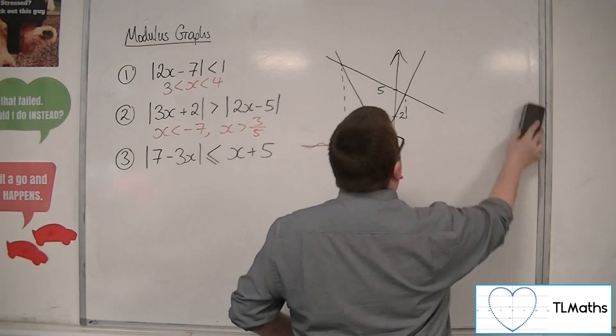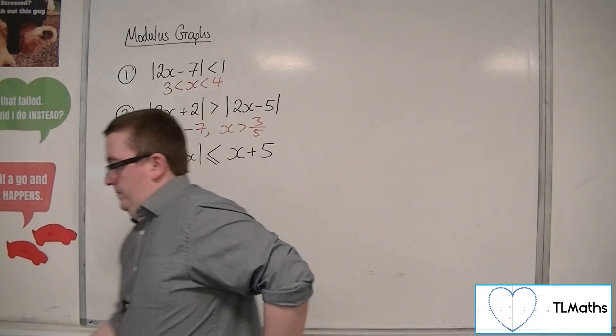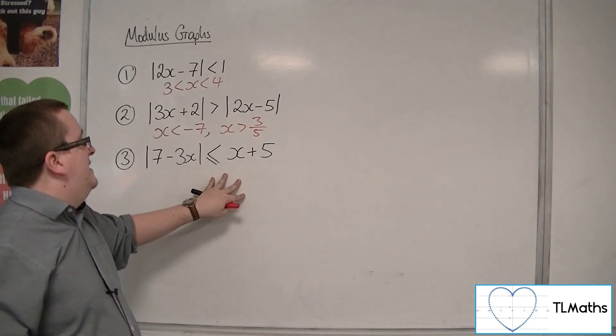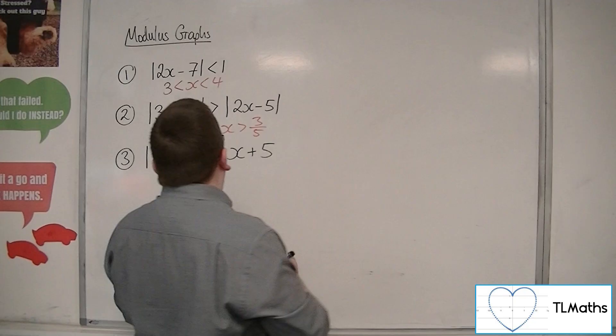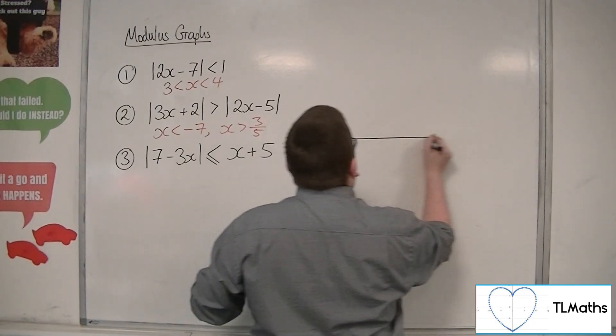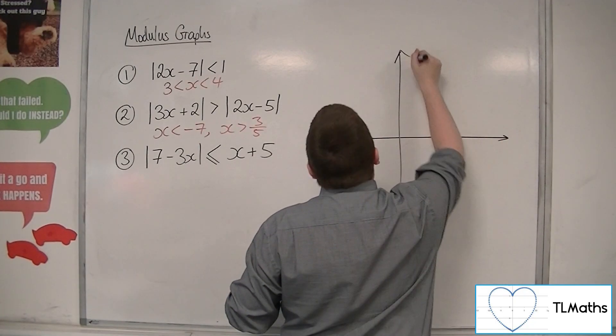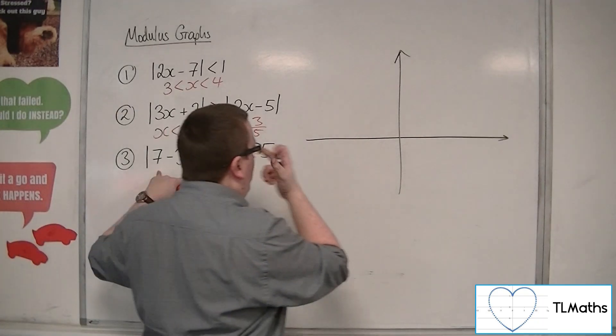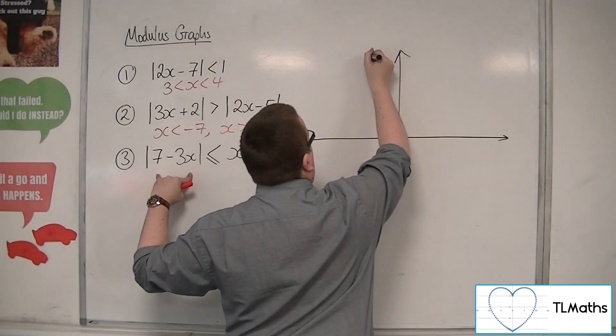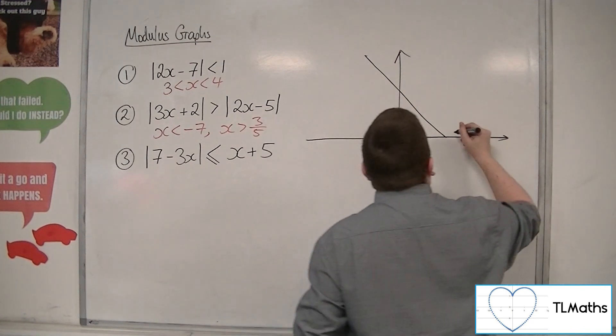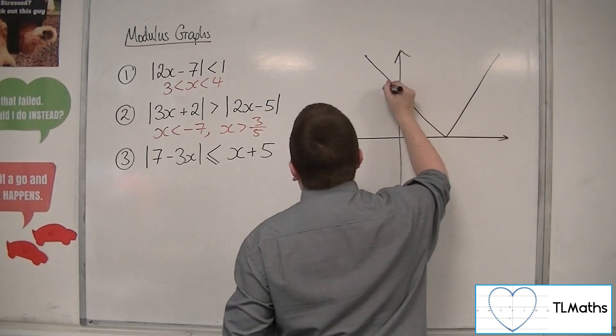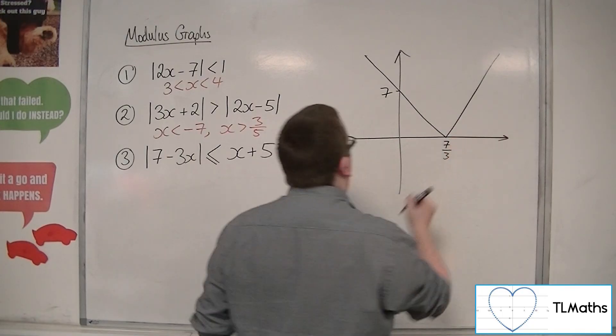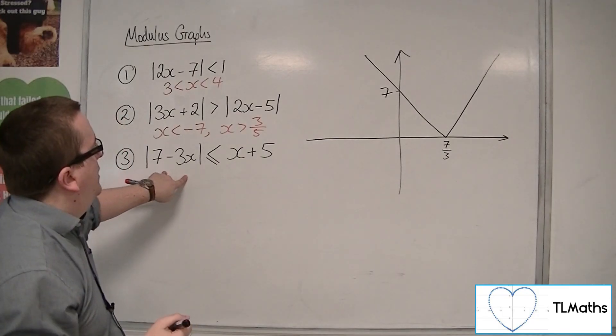So, let's move on to the last one. So, this last one. 7 minus 3x is less than or equal to x plus 5. Right. So, I want to superimpose both of these graphs onto the same sketch once again. 7 minus 3x. So, 7 minus 3x is a graph that's coming down like so. And it will bounce off the x-axis like that. Go through 7. And this point will be 7 thirds. Okay. So, that's the modulus of 7 minus 3x.